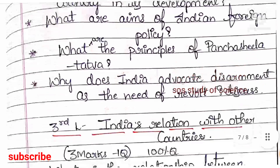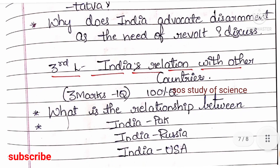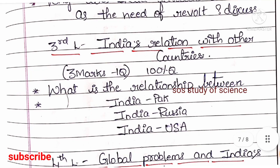The third lesson is India's Relations with Other Countries. You will get one 3-mark question for certain. Focus on the relations between India and Pakistan, India and Russia, and India and USA. You can also study India's relation with China. Students who find it difficult should at least focus on the first three.